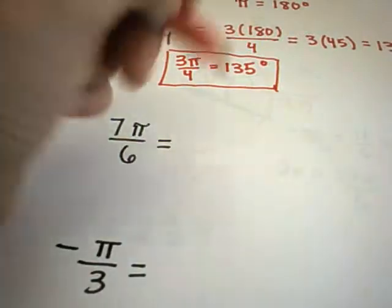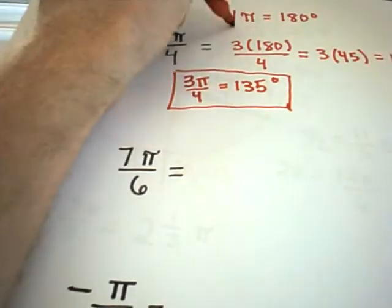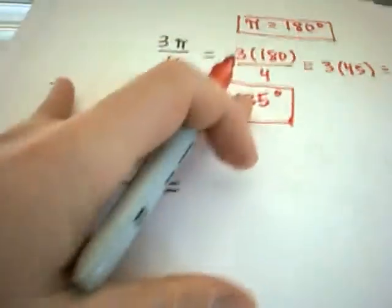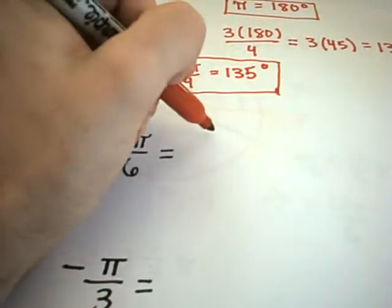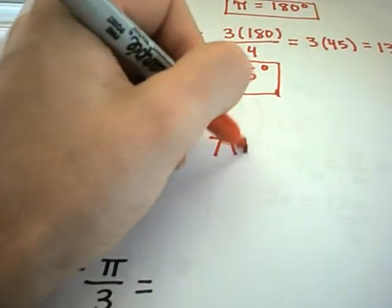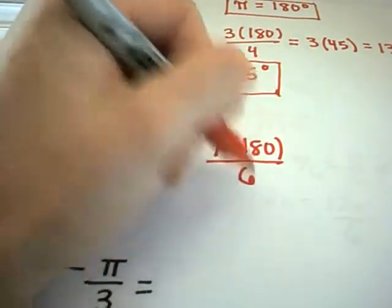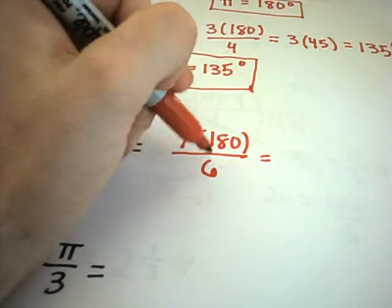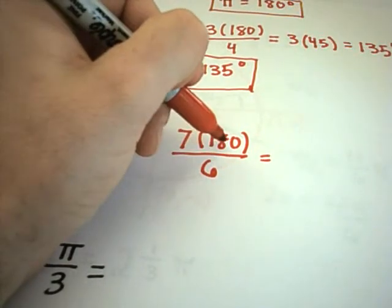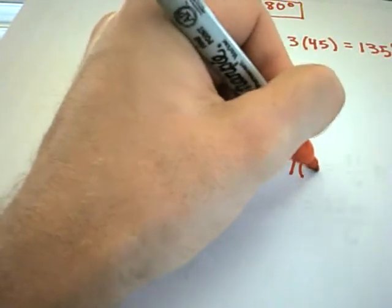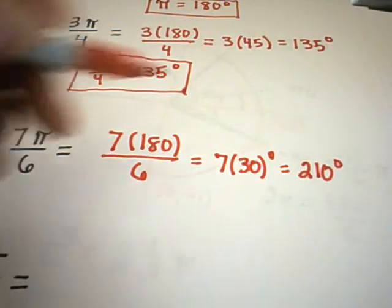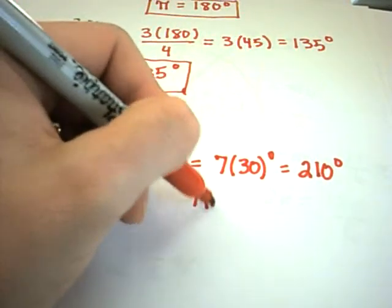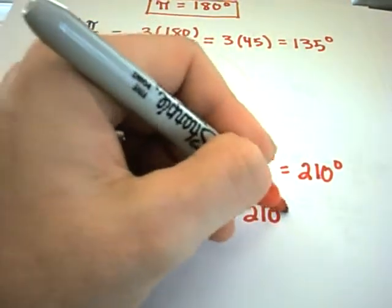Likewise, if we do 7 pi over 6, we'll just multiply, again, our formula pi over 180 degrees. I'm just going to multiply on the left by 7 over 6, and on the right by 7 over 6. So I'll get 7 times 180 over 6. Well, 6 goes into 18 three times, so that means 6 will go into 180 30 times. So we'll get 7 times 30, or 210 degrees. So again, it says that 7 pi over 6 is equivalent to 210 degrees.